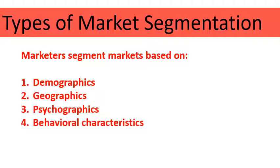The first type is demographics, second geographics, third psychographics, and fourth behavioral characteristics. As we move through, we're going to look at each of these four different ways and some examples for each.